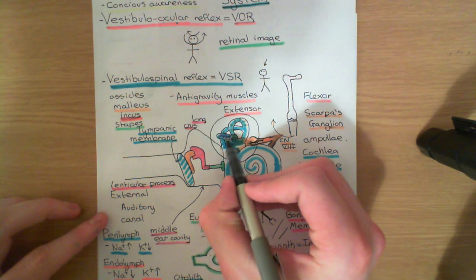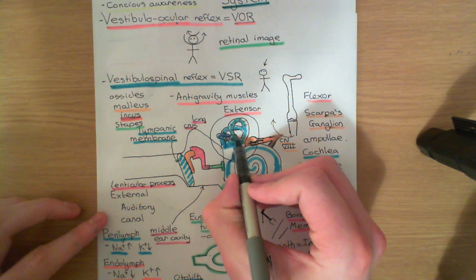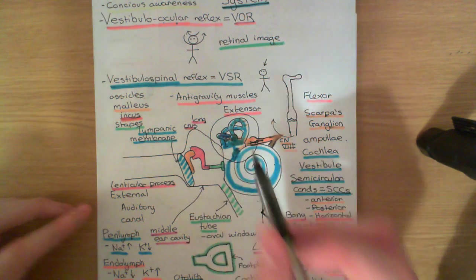Each one of the semicircular ducts has an ampulla. Here is the anterior semicircular duct's ampulla, here's the posterior one's ampulla, and the horizontal one's ampulla is over here. I now want to draw one of these ampullae out and have a look at what's inside, because inside is going to be the sensory apparatus which can transduce information about rotational motion into electrical signals.